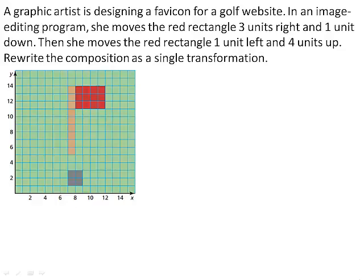A graphic artist is designing a favicon for a golf website. In an image editing program, she moves the red rectangle 3 units right and 1 unit down. Then she moves the red rectangle 1 unit left and 4 units up. Rewrite the composition as a single transformation.